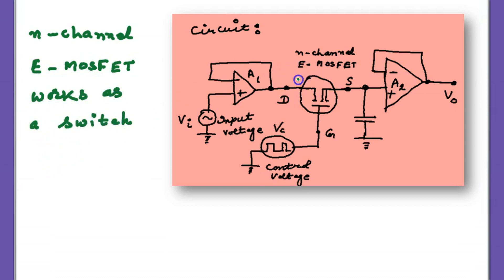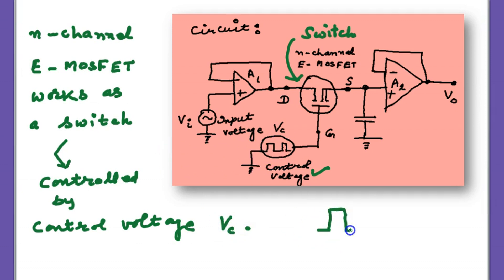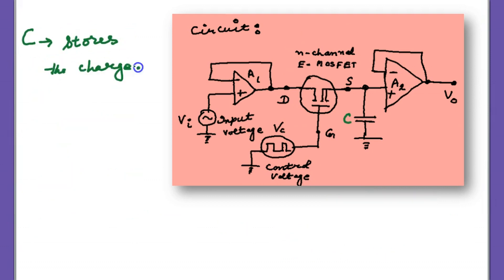You can make the switch on or off, and that switch is controlled by the control voltage Vc. Vc is the control voltage, it is a square wave. So when the high level comes, the switch becomes on. When low level comes, the switch becomes off. High means on and low means off.